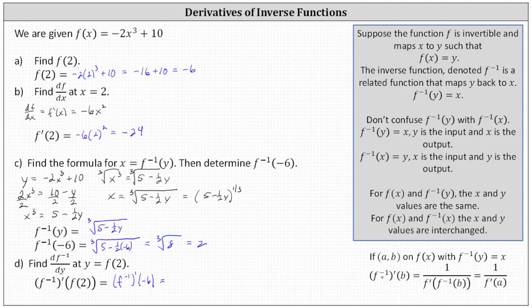Using the reciprocal definition, f inverse prime of negative six is equal to one divided by f prime of f inverse of negative six. We know f inverse of negative six is equal to two, so we can write this as one over f prime of two. And we know f prime of two is equal to negative 24 from part b. Therefore, f inverse prime of f of two, or f inverse prime of negative six, is equal to one divided by negative 24, or negative one twenty-fourth.